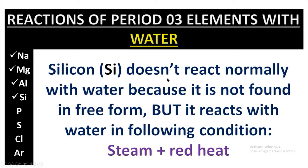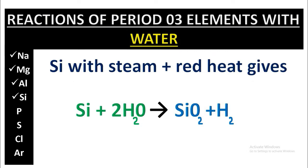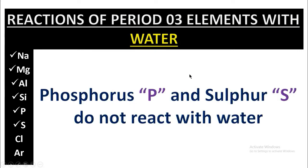This is the reaction of silicon. Unfortunately, silicon doesn't react normally with water because it is not found in free form. But it reacts with water under the following conditions: it reacts when the water is in steam form at red heat. The reaction is: Si + 2H₂O → SiO₂ + H₂, when the water is in steam plus red heat form.